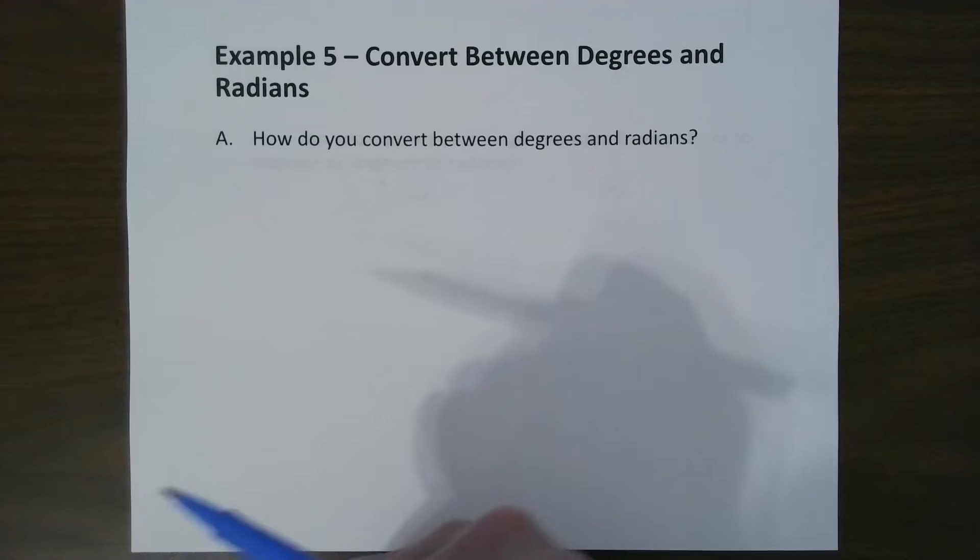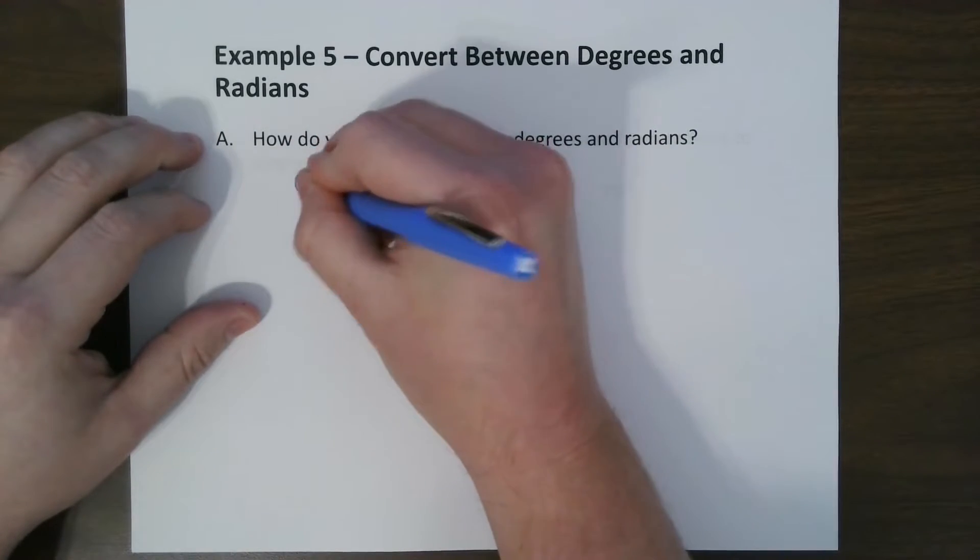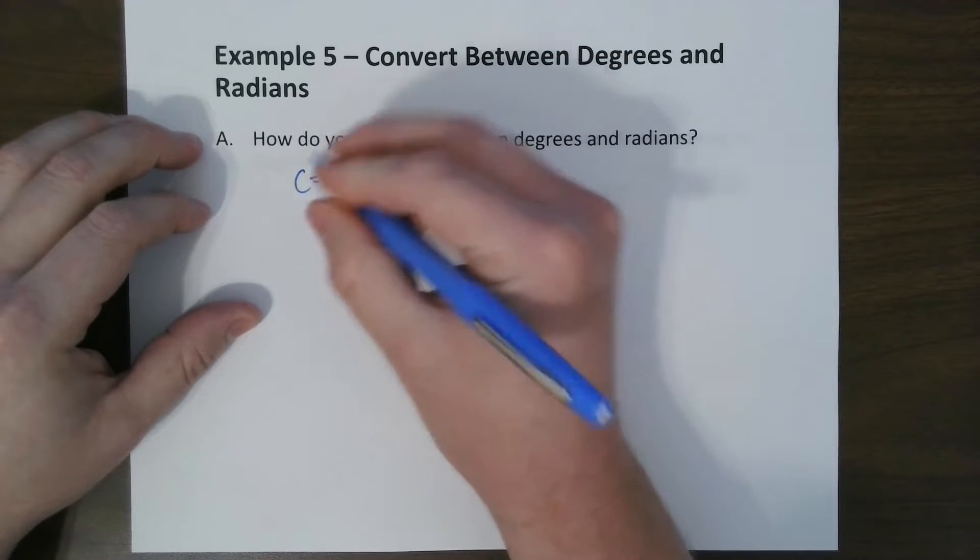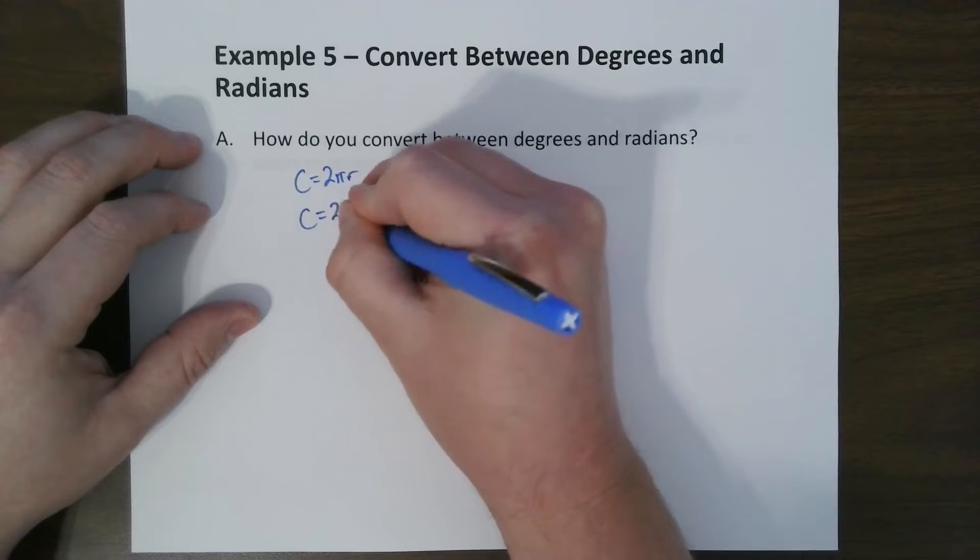So how do we convert between these two? Well, there's an old, that's what I was kind of talking about, is the circumference of a circle is 2 pi r. But we know a unit circle has a radius of 1, so that would just be 2 pi.